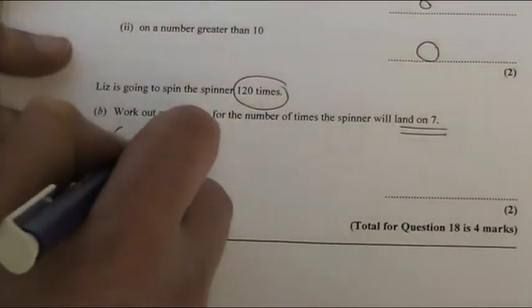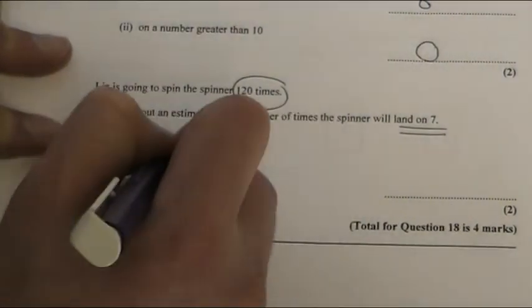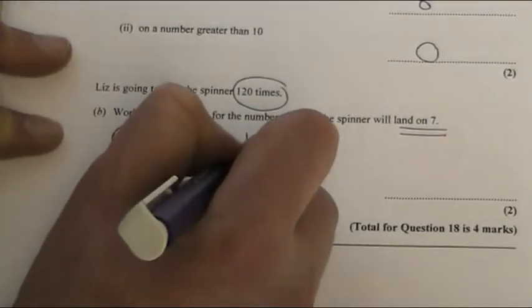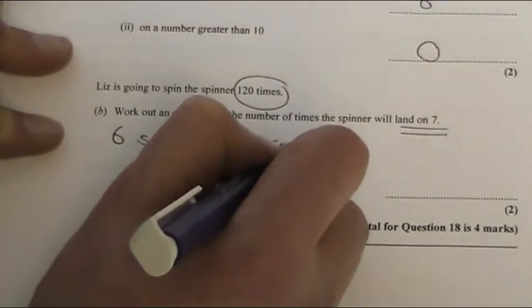So if it's 6 spins, we're expecting to get 1 seven. I'm going to write it like this.